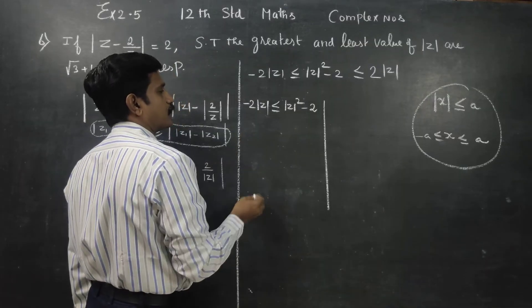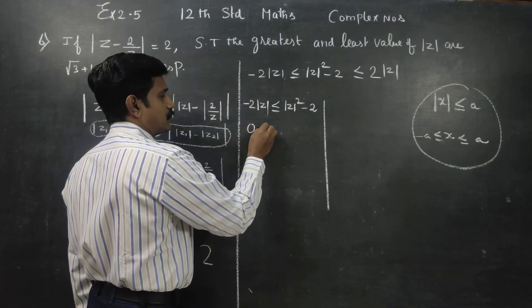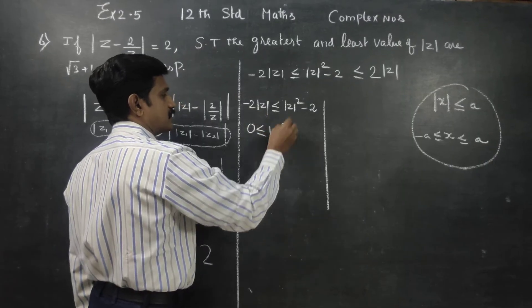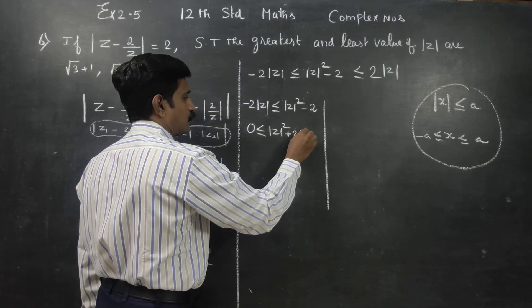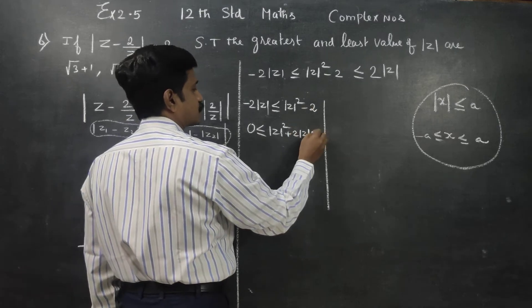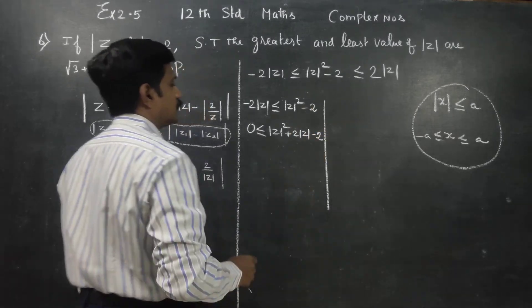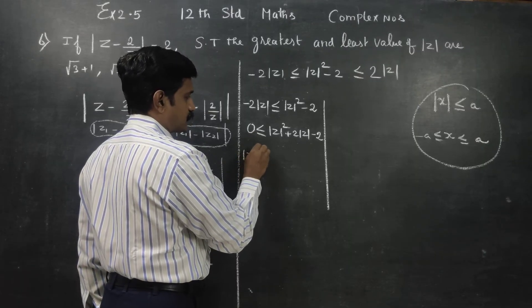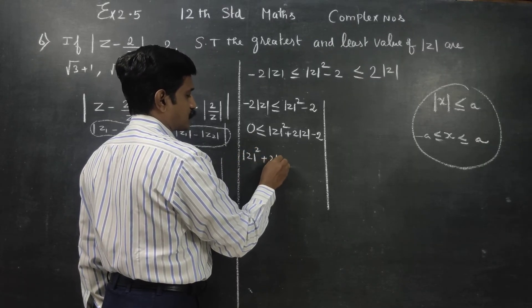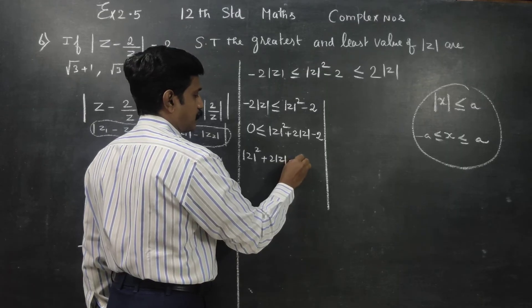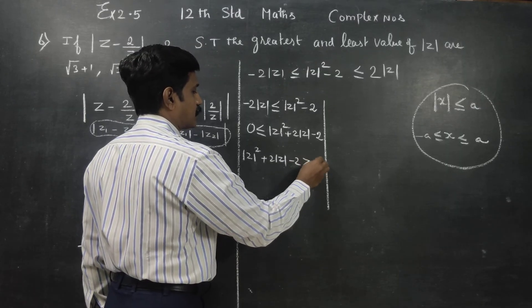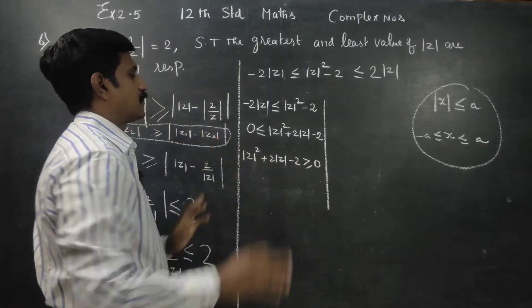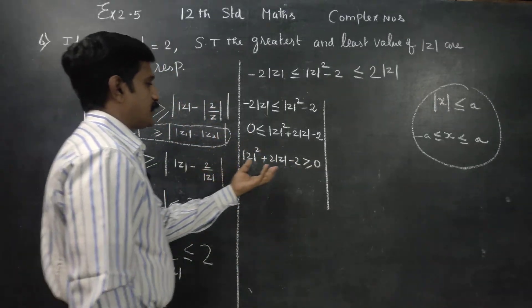This gives us modulus of z squared plus 2 modulus of z minus 2 is greater than or equal to 0. Now we apply the completing the square method.